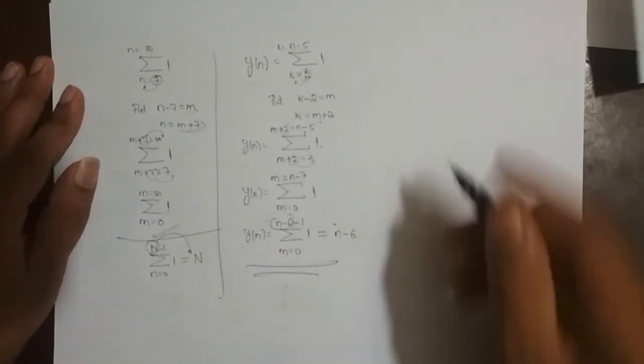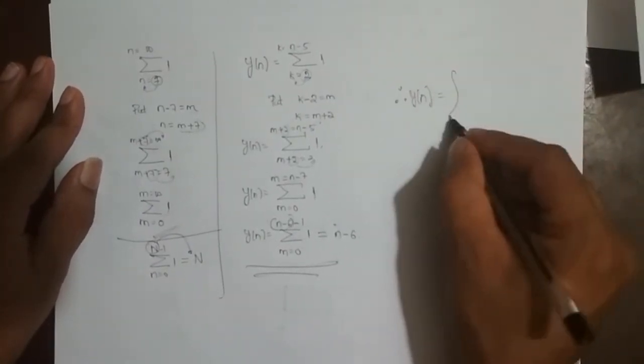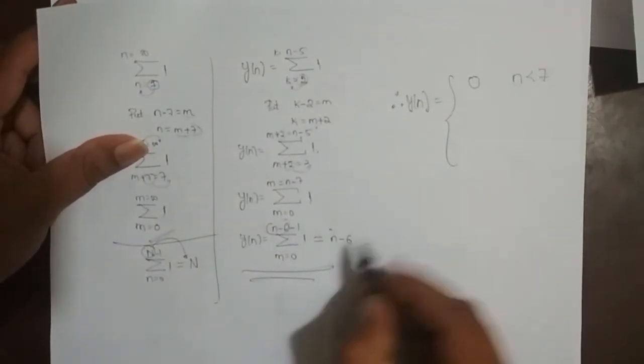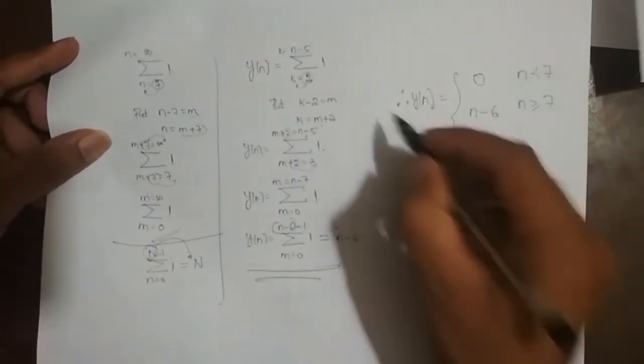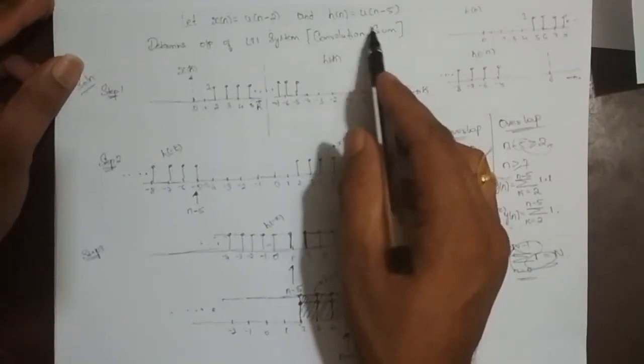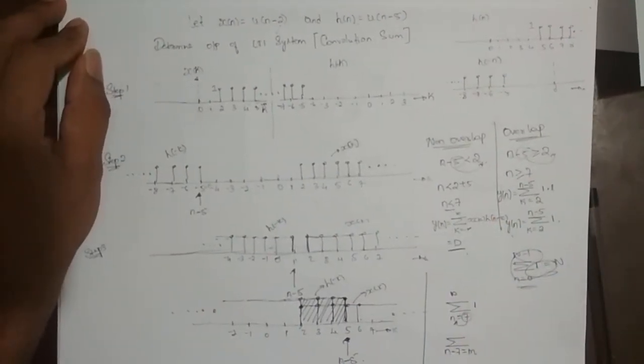Therefore, the output y(n) is: 0 for n less than 7, and n - 6 for n greater than or equal to 7. This is the output of the LTI system for input u(n-2) and impulse response u(n-5). We will take up one more problem in the next video.